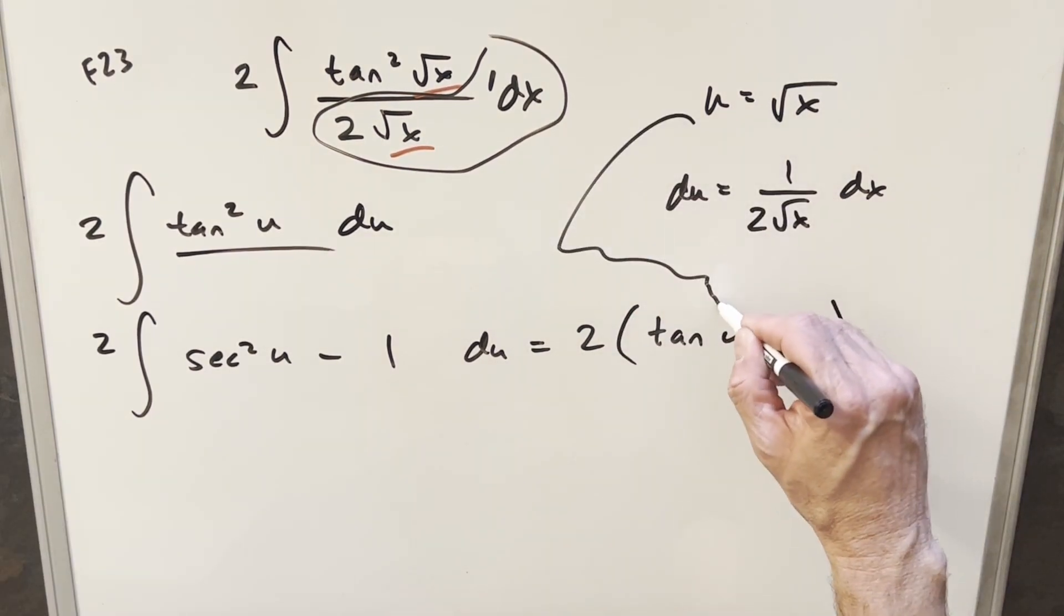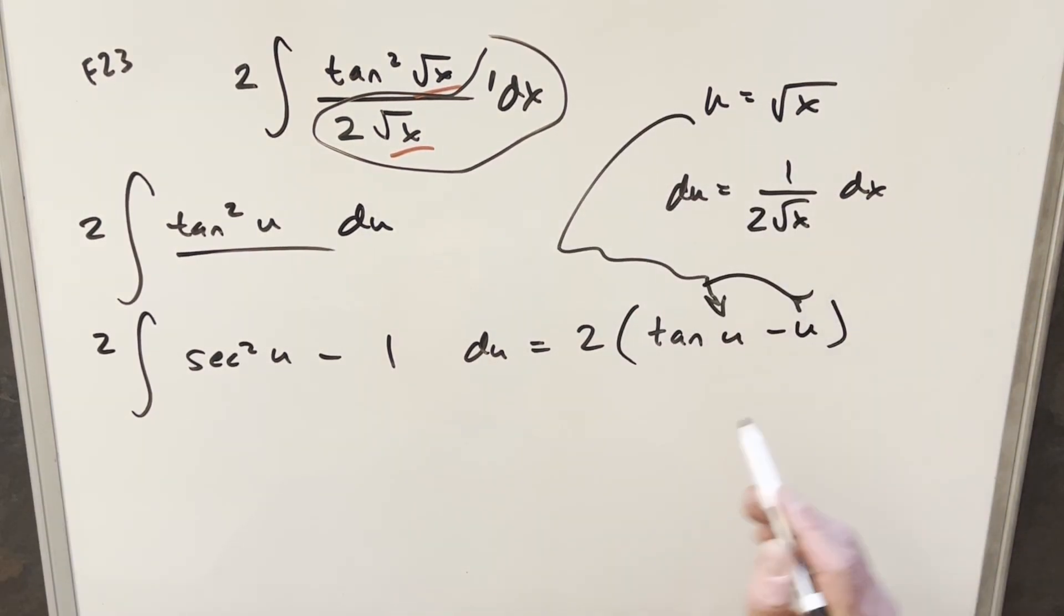And so to finish it off, we're just going to back substitute here and here. So for our final solution, we're just going to have 2 tangent square root of x minus square root of x plus c. And that's it.